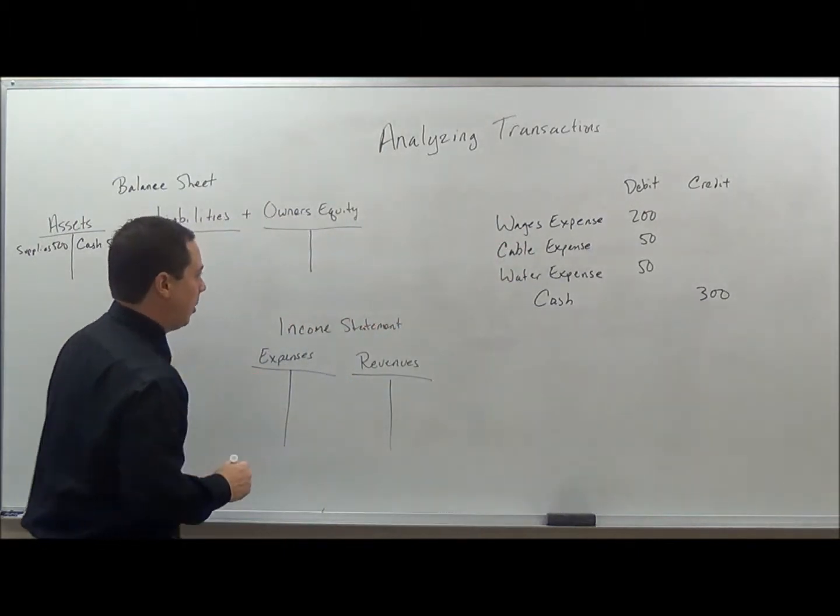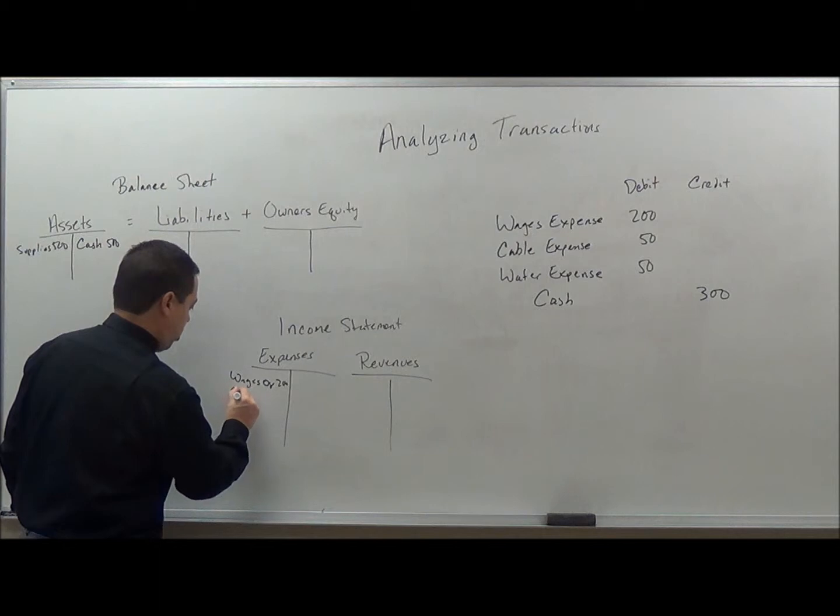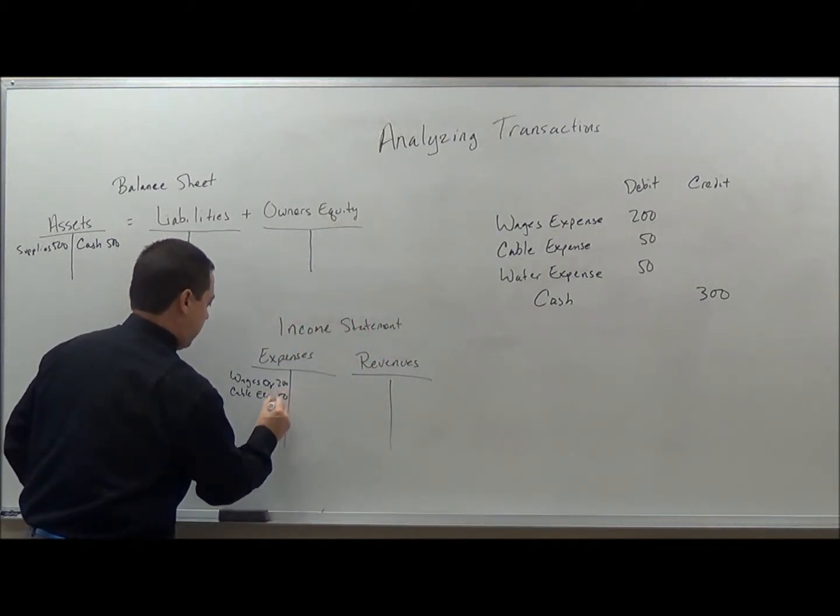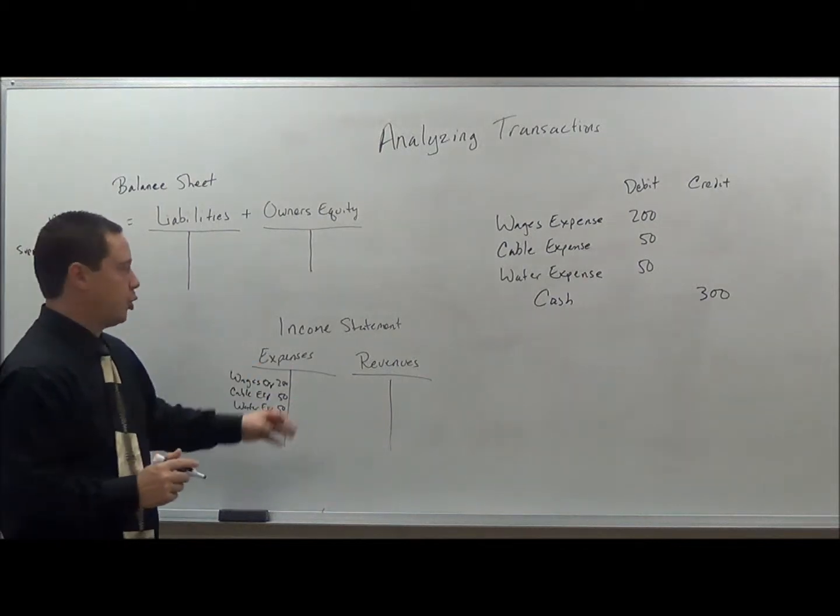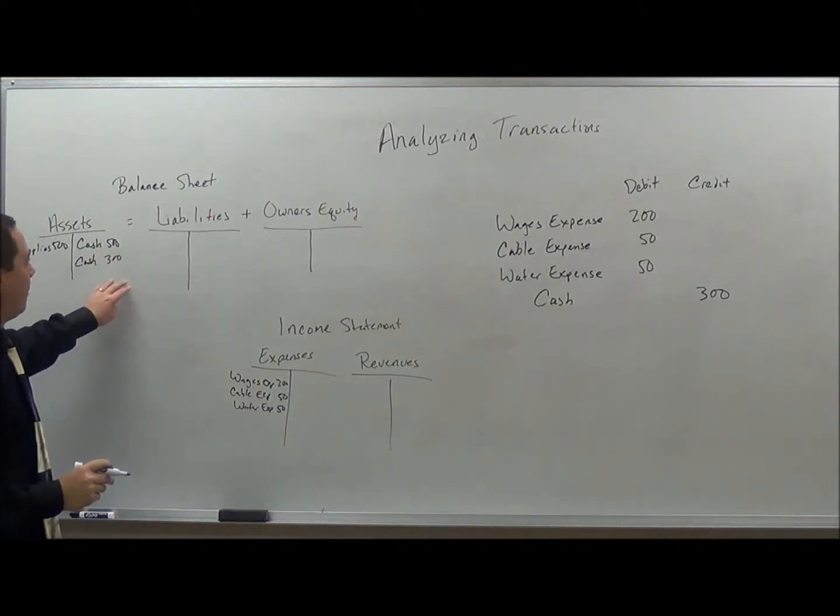So in here, what will happen is I will have wages for $200, I have cable for $50, and then I have water for $50. So that totals there $300. I will then have a cash outlay here of $300. As you can see it still balances.